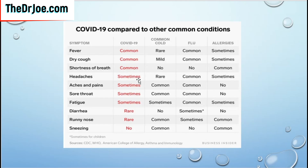Headaches are seen sometimes in COVID-19, but they're more common with flu. Aches and pains — sometimes with COVID-19, more common with flu. Sore throats — sometimes with COVID-19, more common with flu. Fatigue — sometimes in COVID-19, more common with flu. If you've had flu, you'll know how rotten you actually feel. Diarrhea is rare in COVID-19, seen sometimes with flu. Running nose is rare with COVID-19, sometimes with flu. Sneezing is not common to both.